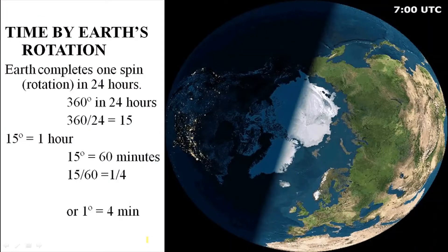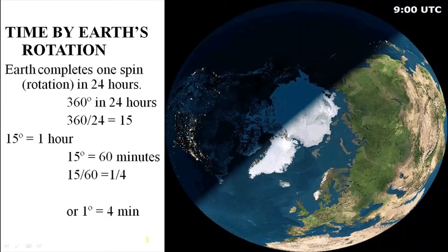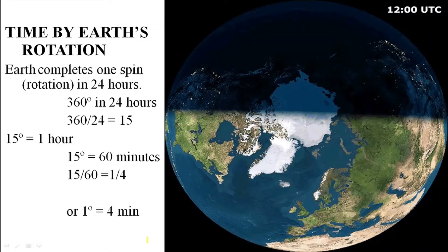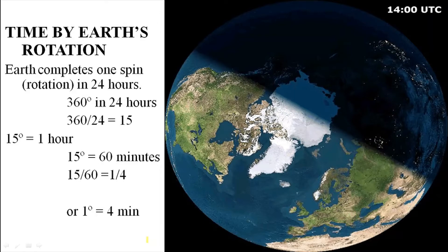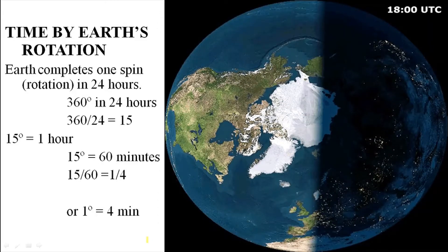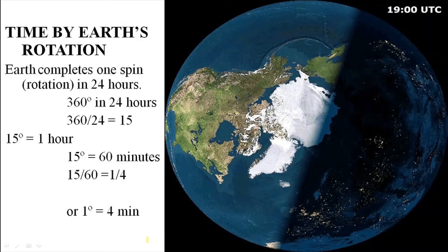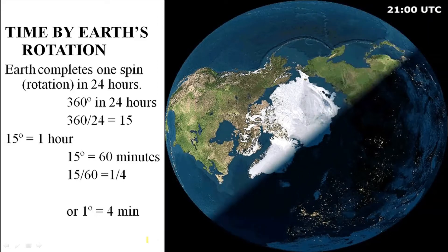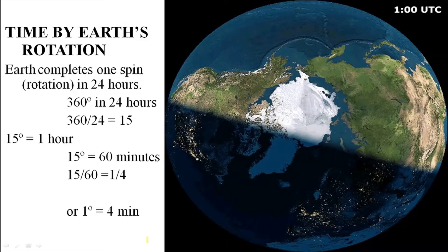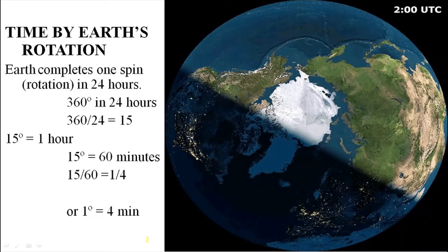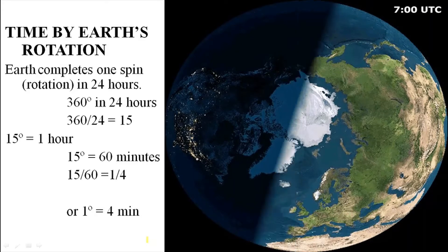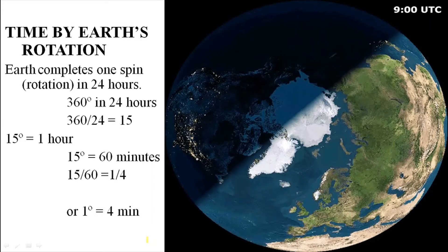First of all, Earth rotates around on its axis. It takes 24 hours to rotate — it spins once in 24 hours. So if we divide 360 degrees by 24 hours in a day, we get 15. So the Earth moves 15 degrees in one hour.